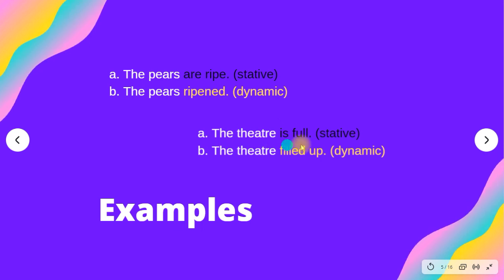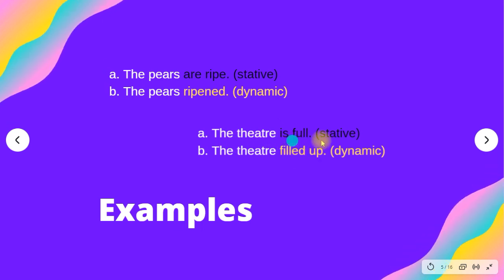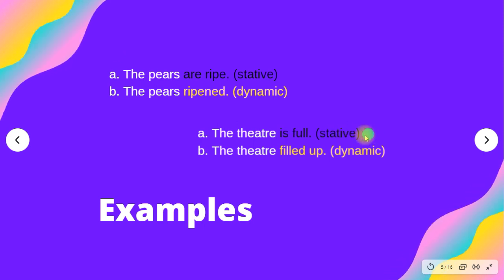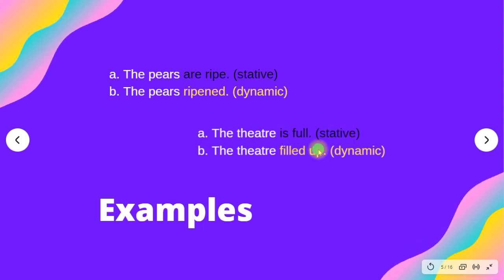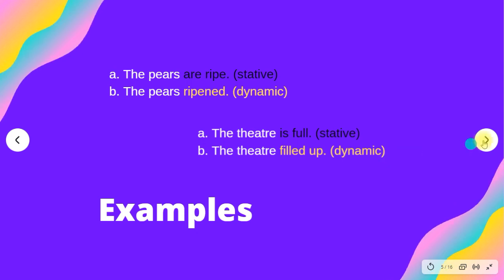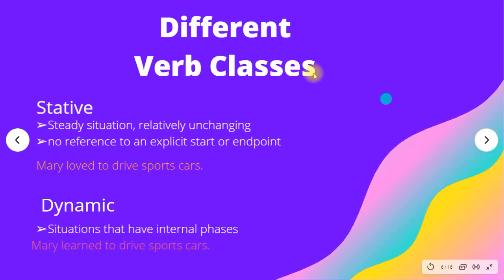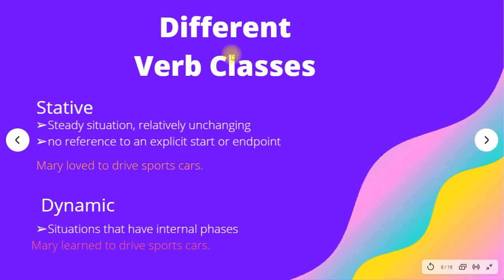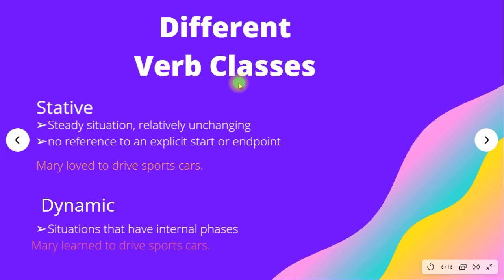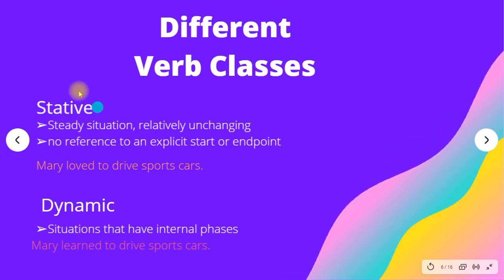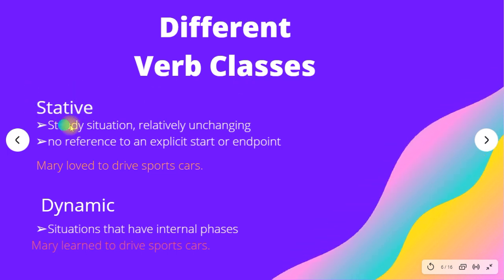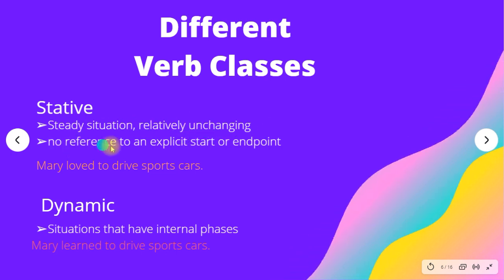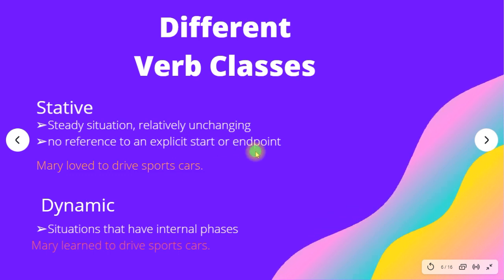Similarly, 'the theater is full' uses the adjective 'full' to show a stative situation, while 'the theater filled up' shows a dynamic situation. Stative and dynamic can also be shown by different verb classes. Stative means a steady, relatively unchanging situation — it also has no reference to an explicit start or end point.